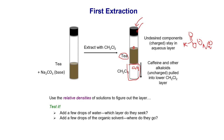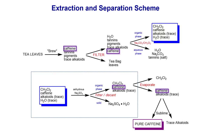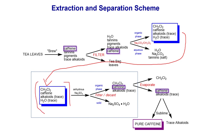From here, we can extract the caffeine from the tea solution. But it's not done yet. Once we get the organic layer — the dichloromethane layer — it still has some traces of water, alkaloids, caffeine, and dichloromethane. We're going to move on to another extraction step.